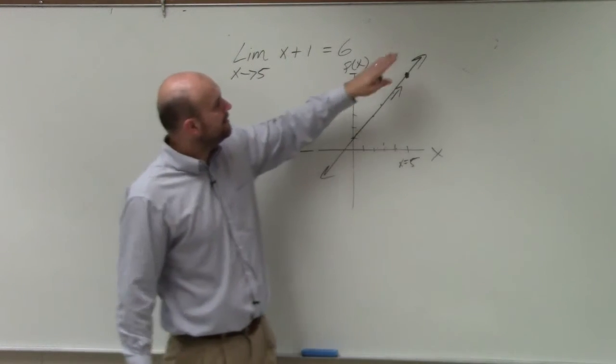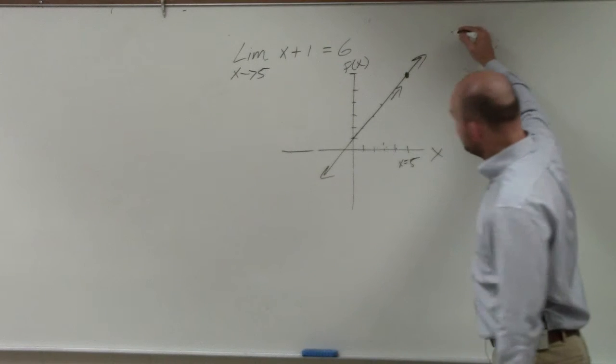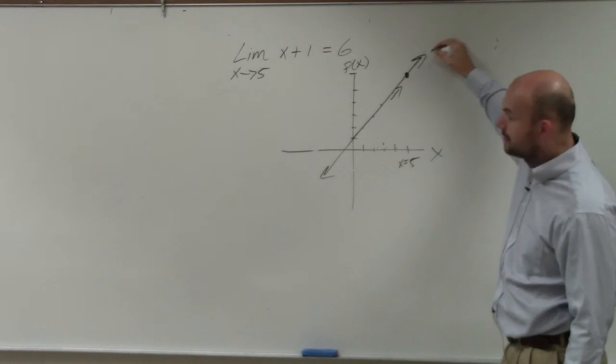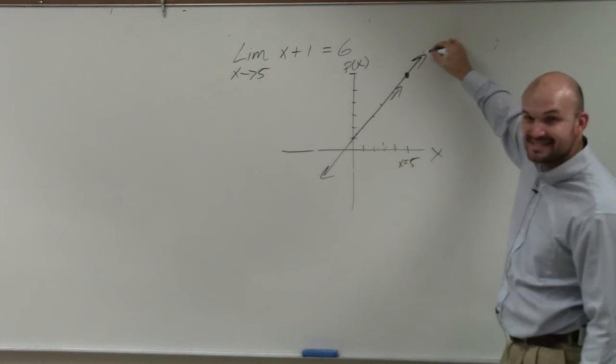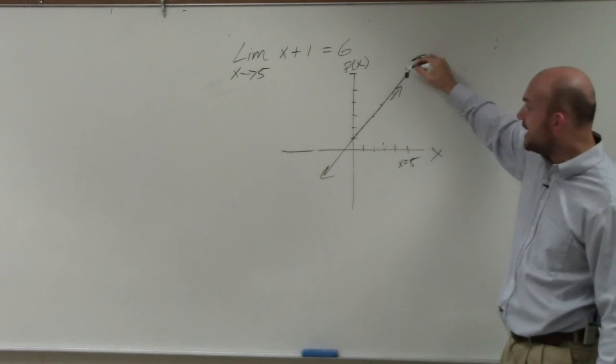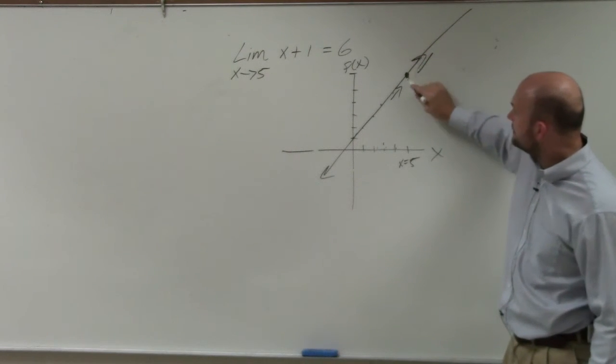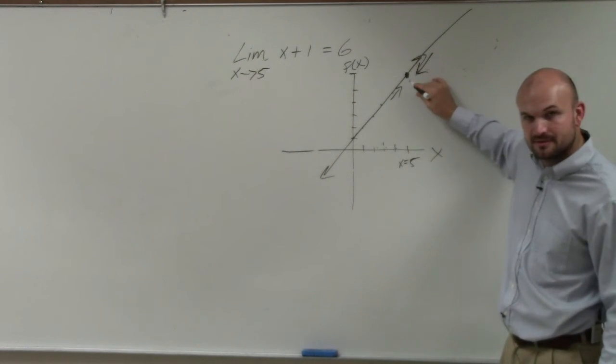Okay, and you could also see what if we are decreasing? What if we're going from x equals 8, 7, 6, 5? As it's going down, you could see that the f of x values are also going down and they're approaching this value 6.